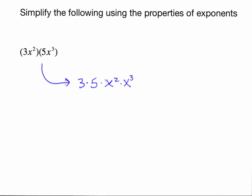What allows me to do that is that if I have only multiplication, that's commutative. So 3 times 5 is 15. And if I have x squared multiplied by x to the third, we know this will be x to the 2 plus 3. So this product will be 15x to the fifth.